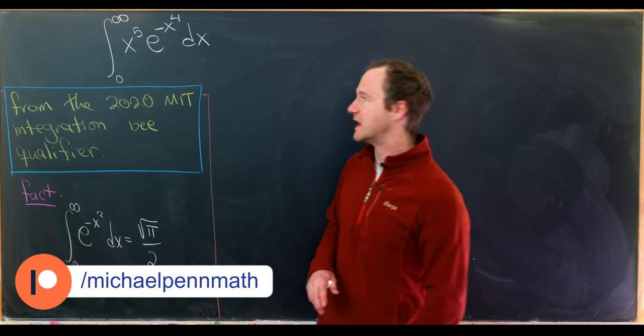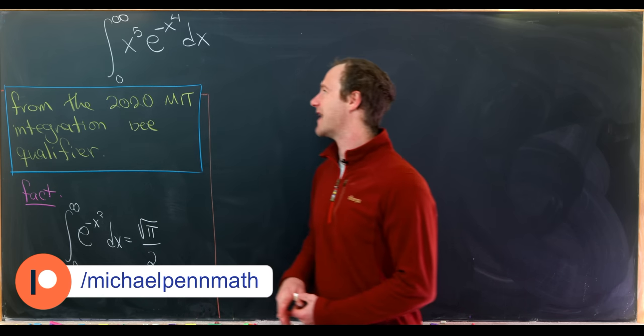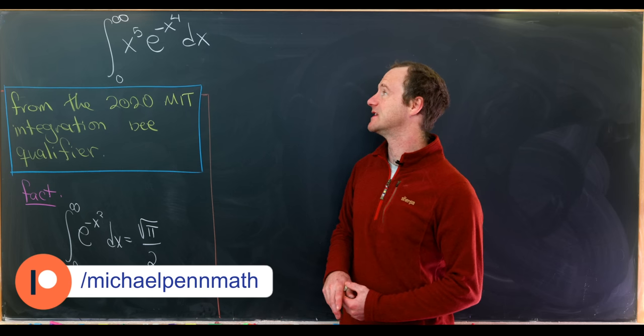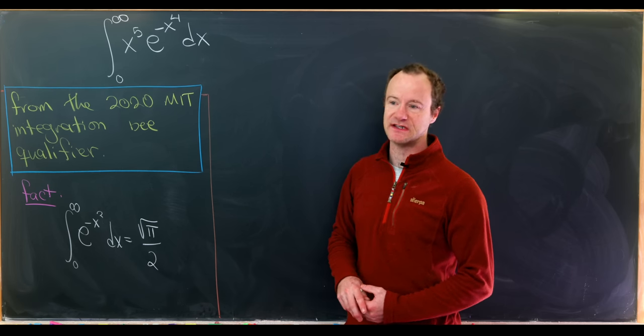So what do we have? We have the integral from 0 to infinity of x to the 5th e to the negative x to the 4th dx.